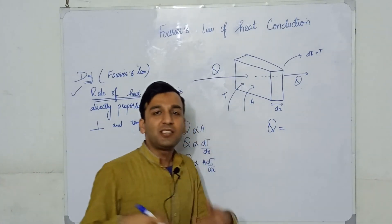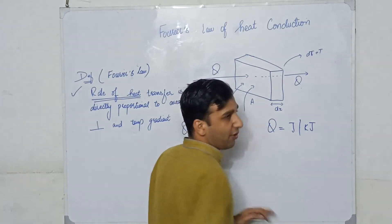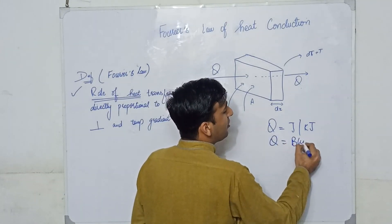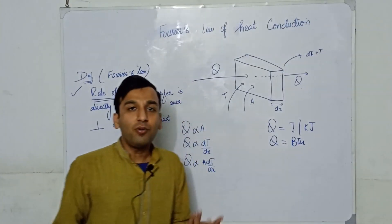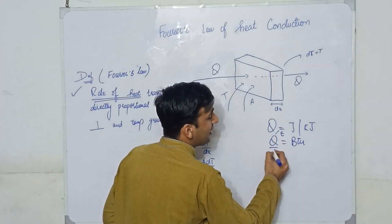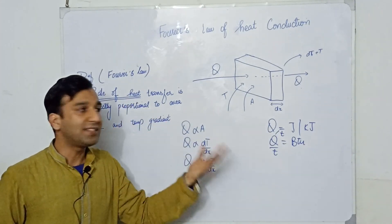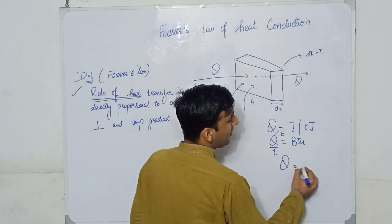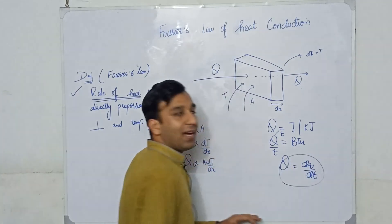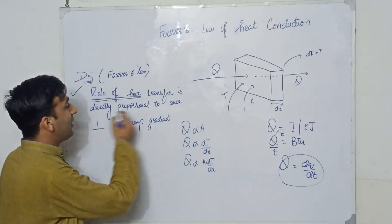First we will see what is the rate of heat transfer. We know that Q has units of joules or kilojoules in SI units, and BTU in American units. The rate of heat transfer is Q divided by time t, which in differential form we write as dQ/dt. This is the rate of heat transfer.